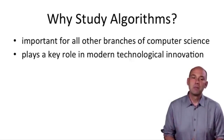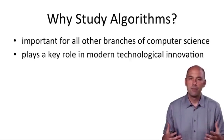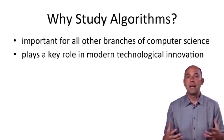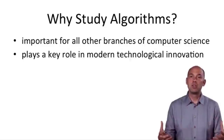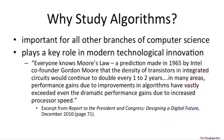Second, algorithms play a key role in modern technological innovation. Search engines use a tapestry of algorithms to efficiently compute the relevance of various web pages to a given search query. The most famous such algorithm is the PageRank algorithm, currently in use by Google. Indeed, in a December 2010 report to the United States White House, the President's Council of Advisors on Science and Technology argued that in many areas, performance gains due to improvements in algorithms have vastly exceeded even the dramatic performance gains due to increased processor speeds.